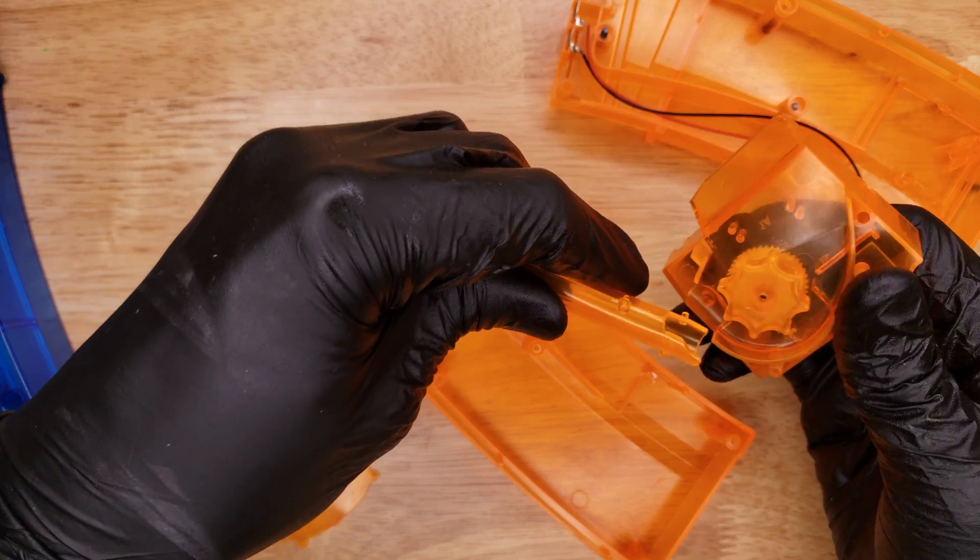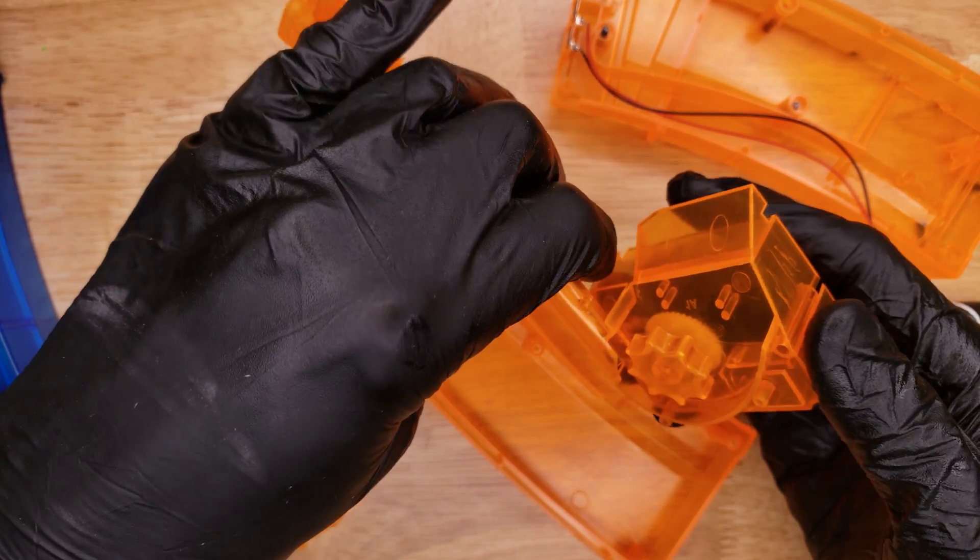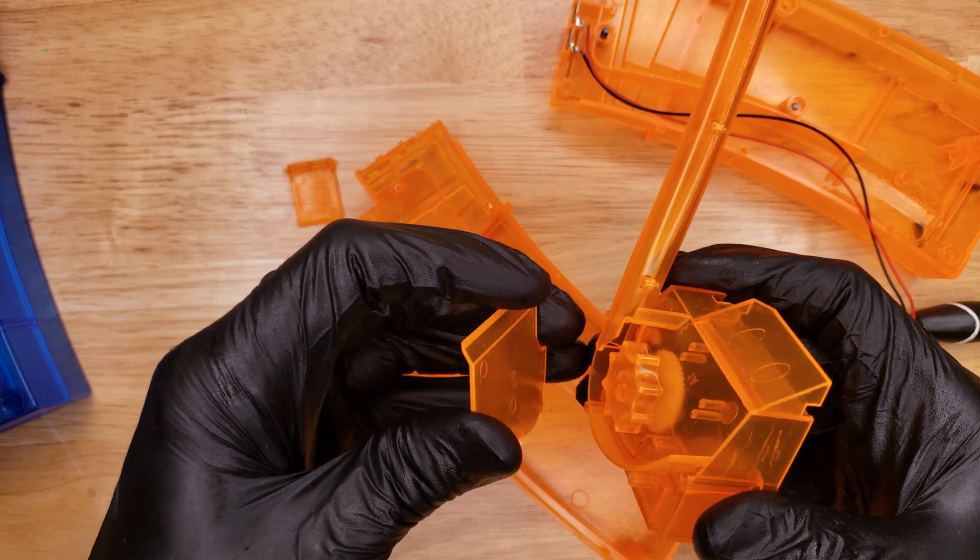So to reassemble all this, start off with putting the feed tube back on to the gearbox thing here. And then put this cover plate back on here.